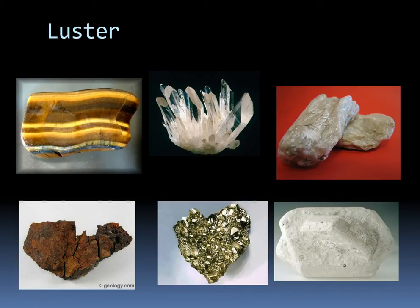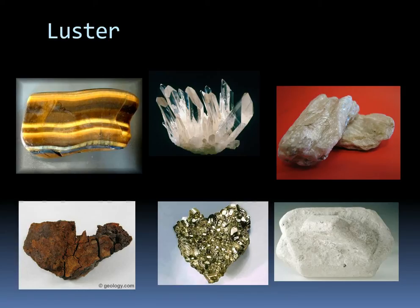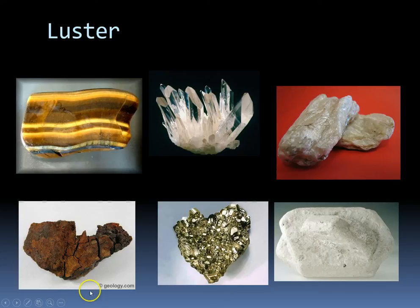Out of the non-metallic lusters, there are several types. Tiger's eye has a satiny luster — it kind of lights up like satin. Quartz in this case has an adamantine luster, meaning it's really, really shiny, common in gemstone minerals. Talc has a pearly luster — a soft, barely translucent look like pearls. Kaolinite has a dull luster, not very shiny. And gibbsite has an earthy luster, meaning it looks sort of like dirt.